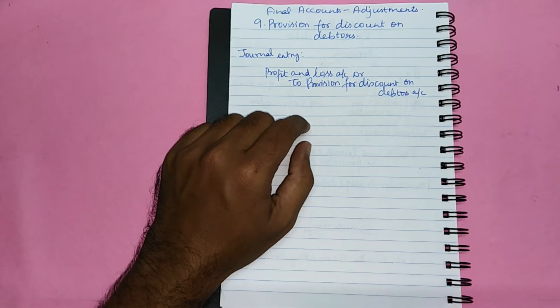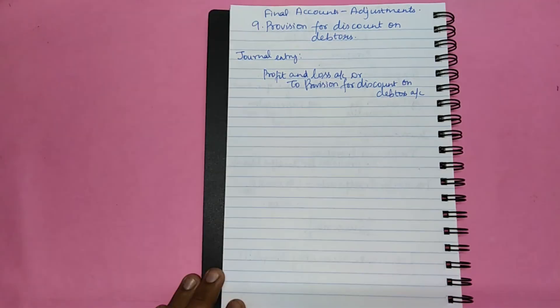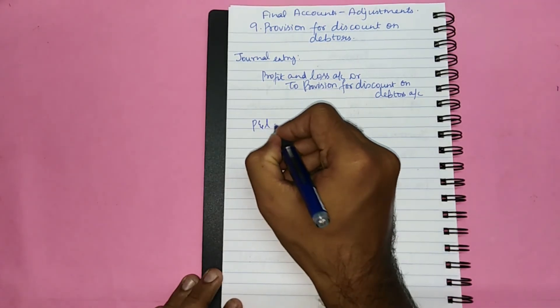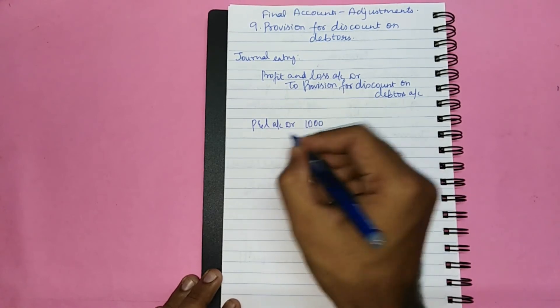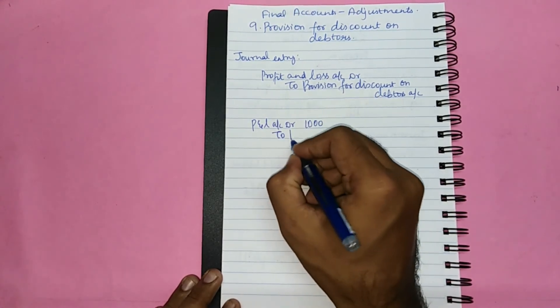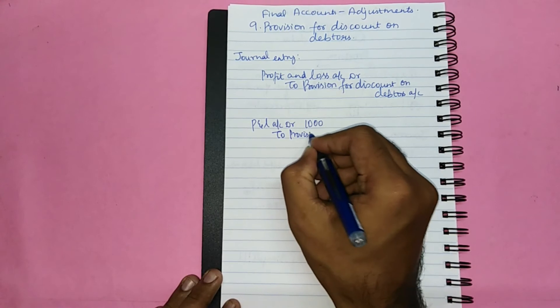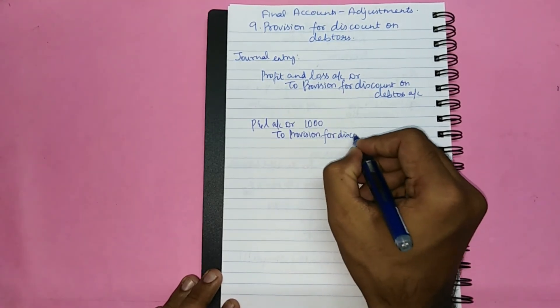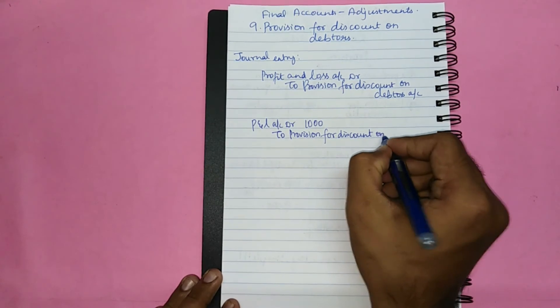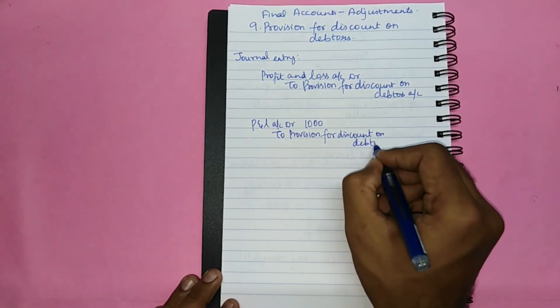Let us have an illustration to understand this better. Let us consider creating a provision for discount on debtors amounting to Rs.1000. Therefore, the journal entry for that would be Profit and loss account debit Rs.1000 to provision for discount on debtors.